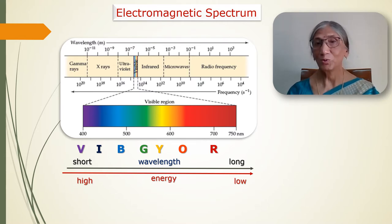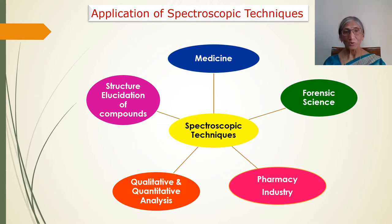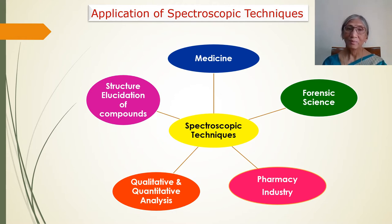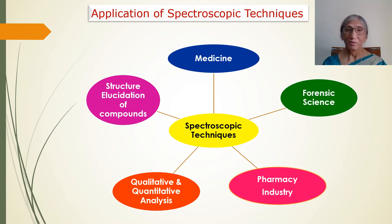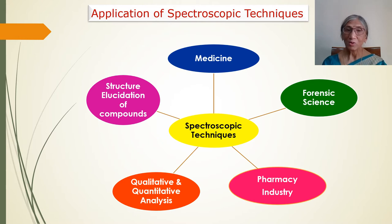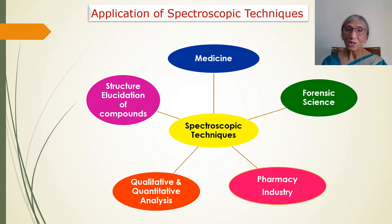The applications of spectroscopy are in the fields of medicine, forensic science, pharmacy industry, qualitative and quantitative analysis, and structure elucidation of organic compounds. Our first area will be structure elucidation of organic compounds. Once students are thorough with the application of spectroscopy for structure elucidation, they can switch over to pharmacy, forensic science, and the field of medicine. The study of structure elucidation by spectroscopic techniques is a very important part of chemistry.